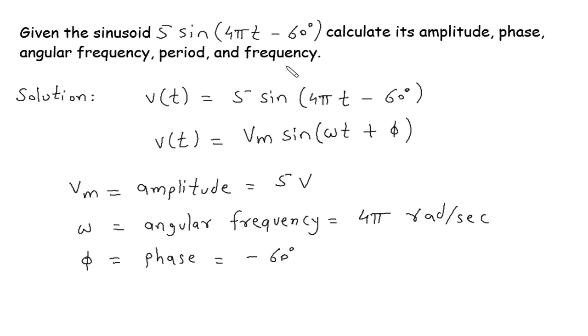Then next we have to find the period and frequency. So period is equal to T and T is equal to 1 upon f.